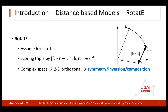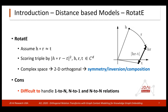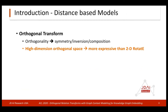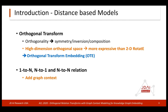RotateE is a 2D orthogonal transform, so it has symmetry, inversion, and composition properties. However, RotateE is also difficult to handle 1-to-n, n-to-1, and n-to-n relations. Motivated by RotateE, we propose to model relations as orthogonal transforms in high-dimensional space, extending 2D RotateE to high-dimensional space. We call our method orthogonal transform embedding. To deal with 1-to-n, n-to-1, and n-to-n relations, we add graph context to OTE.